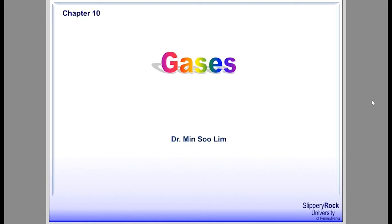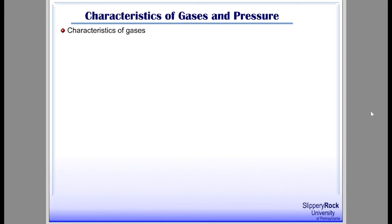Matter in nature can be broadly classified into solid, liquid, and gas based on their physical states. We will study the physical properties of those three phases in the next two chapters. Now let's take a journey into the world of gas. If someone asks you what gas is like, how can you tell him about it? You may say it's something like air or water vapor, or you may want to generalize it by describing the characteristics of gases.